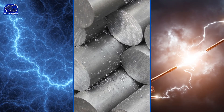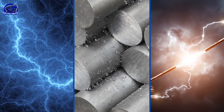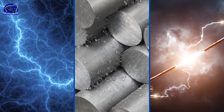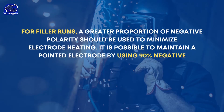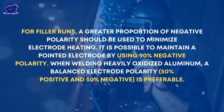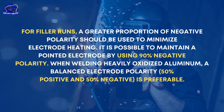Switching between polarities makes arc reignition easier, reducing or eliminating HF. To determine the relative amount of heat generated in the workpiece and the electrode, it is important to balance the waveform and vary the proportion of positive to negative polarity. A positive polarity power source is used to weld the root run to generate the maximum amount of heat. For filler runs, a greater proportion of negative polarity should be used to minimize electrode heating. It is possible to maintain a pointed electrode by using 90% negative polarity. When welding heavily oxidized aluminum, a balanced electrode polarity — 50% positive and 50% negative — is preferable.